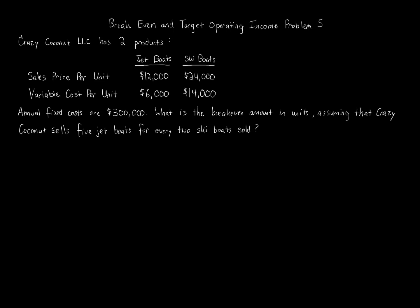Break-even and target operating income problem. Crazy Coconut LLC has two products: jet boats and ski boats. Sales price per unit for jet boats is $12,000; for ski boats it's $24,000. Variable cost per unit for jet boats is $6,000; for ski boats it's $14,000. Annual fixed costs are $300,000. What is the break-even amount in units, assuming Crazy Coconut sells five jet boats for every two ski boats sold?